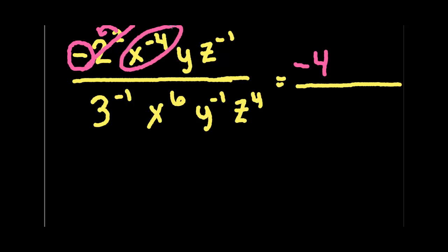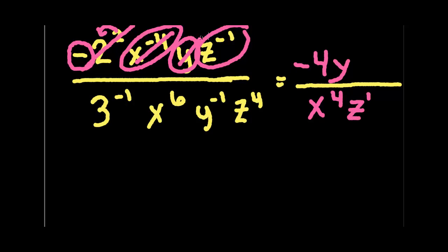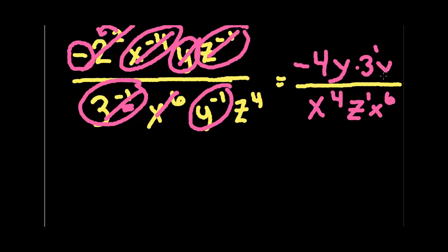Then we have x to the negative 4. So what do we do with him? Well, he's a negative exponent. So we're going to bring him down and now I can cross him off. Then we have a y. He has a positive exponent, so he can stay where he is. z to the negative 1. He is a negative exponent, so he's going to move down here. He becomes z to the positive 1. Now we have 3 to the negative 1. Now notice his exponent is negative, so that means he needs to move. So he's going to move up here and he's going to become 3 to the positive 1. x to the 6th, he can stay down here. y to the negative 1, he's going to have to move, so he's going to come up here and become y to the positive 1. And then lastly, z to the 4th is going to stay on the bottom.